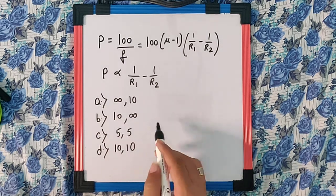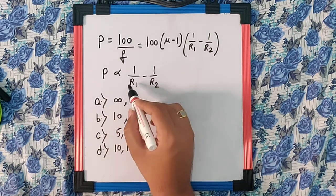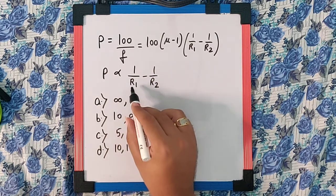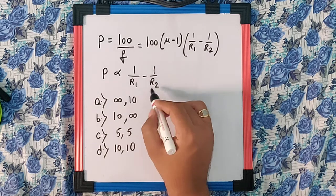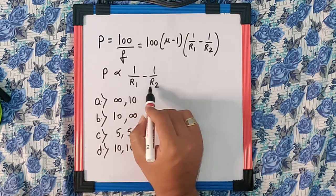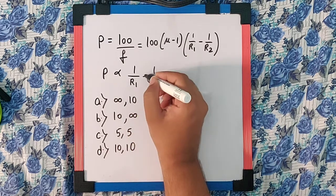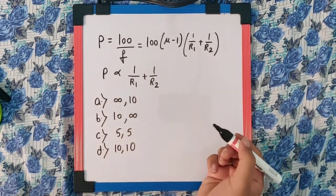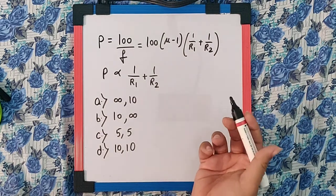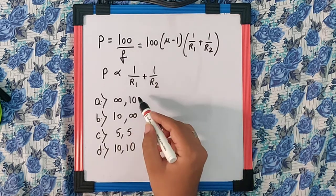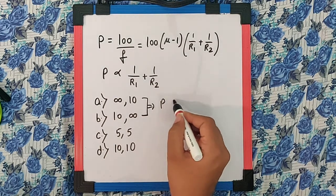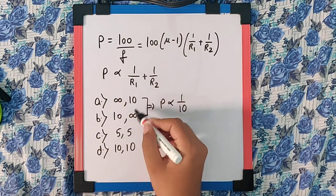So if we try one thing at a time, I can say R1 if it is infinity, this becomes 0, this becomes 1 by 10. Please remember this negative sign will always convert into positive sign for a double convex lens because for double convex lens, the R1 is positive and R2 is generally negative. So for option A and for option B, in both the cases, power is going to be proportional to 1 by 10. So they are going to be the same.